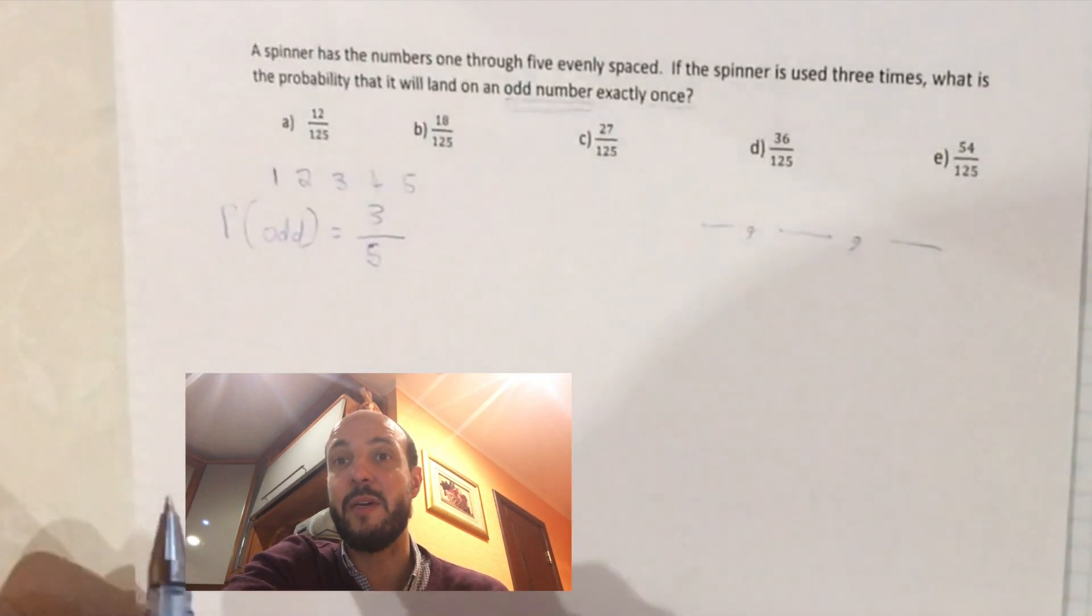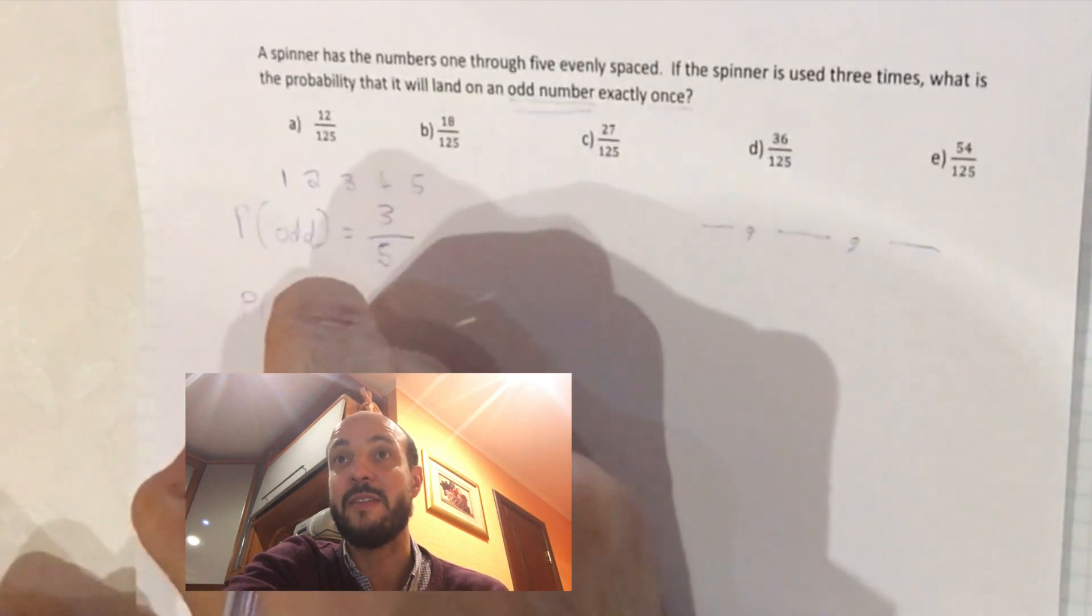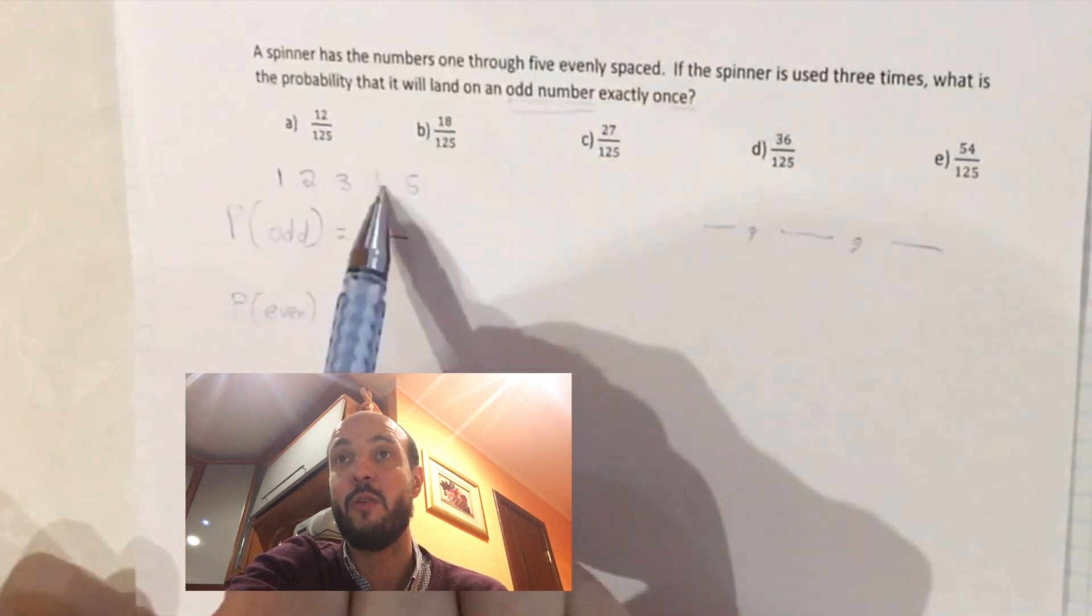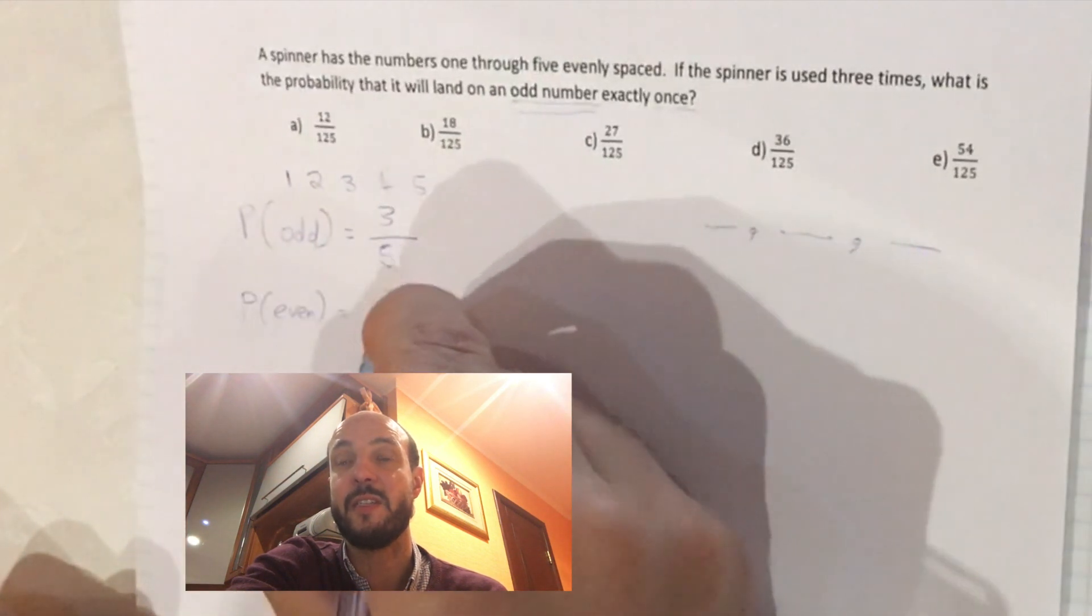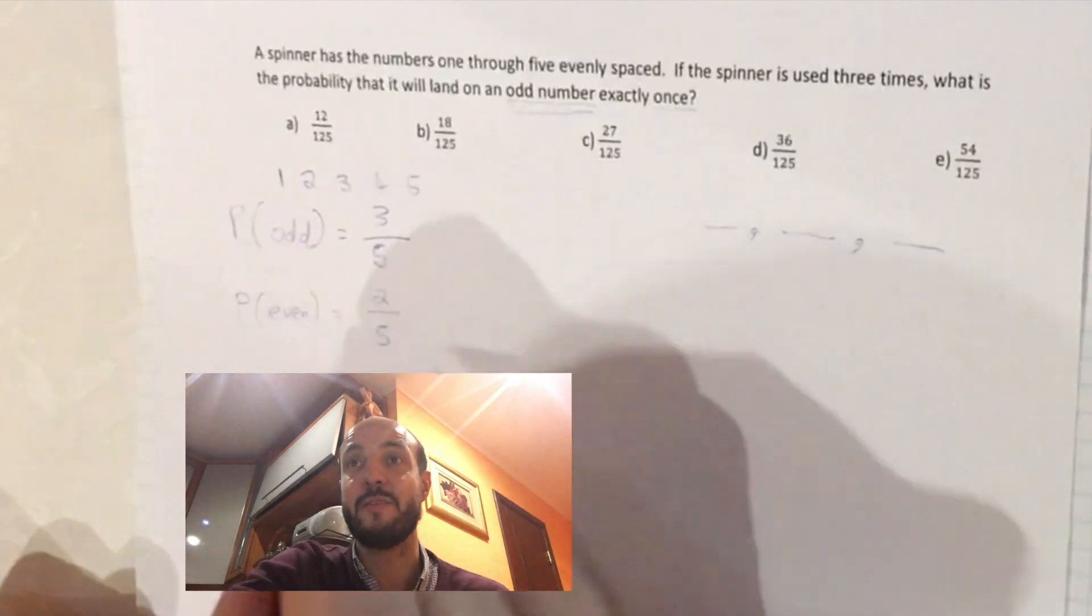What's the probability of getting an even number? All numbers are either even or odd. So the probability of getting an even number means we get a 2 or a 4, so there's 2 different options out of 5 options, so we've got a probability of 2 out of 5.